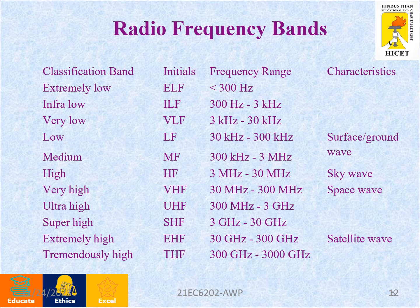Continuing the radio frequency bands: medium frequency (MF): 300 kHz to 3 MHz. High frequency (HF): 3 MHz to 30 MHz — sky wave propagation. Very high frequency (VHF): 30 MHz to 300 MHz — space wave. Ultra high frequency (UHF): 300 MHz to 3 GHz. Super high frequency (SHF): 3 GHz to 30 GHz. Extremely high frequency (EHF): 30 GHz to 300 GHz — satellite wave. Tremendously high frequency (THF): 300 GHz to 3000 GHz.